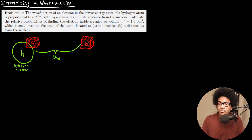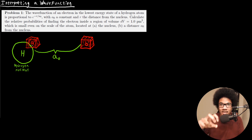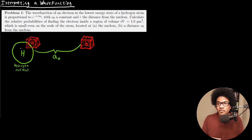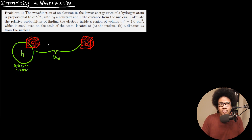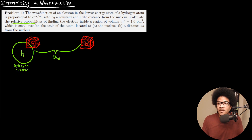I've drawn out a little sketch to help visualize what this question is asking. We have this hydrogen nucleus, and our job is to figure out the relative probability of an electron being located at the actual nucleus itself versus some distance a-naught from the nucleus. We're not going to use any calculus at this point. I just want you to focus on the qualitative meaning and leave the calculus aside for now. If we want to really figure out probabilities, we'll have to integrate over regions of space, but for now let's just use relative probabilities.